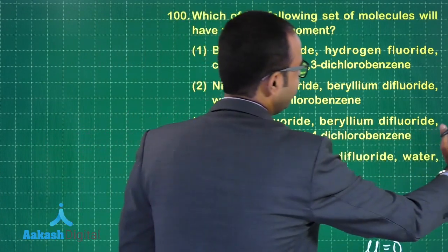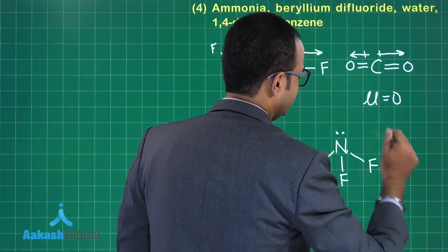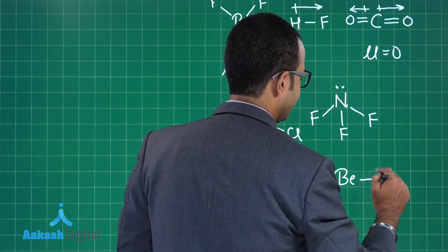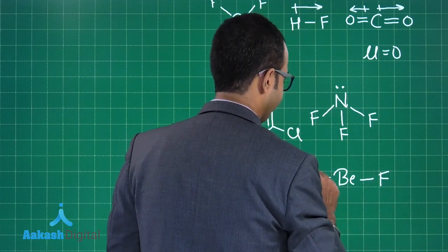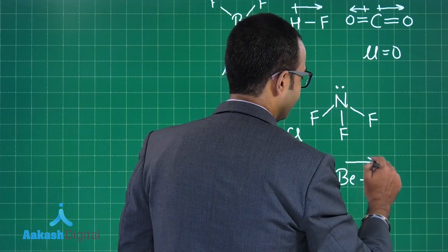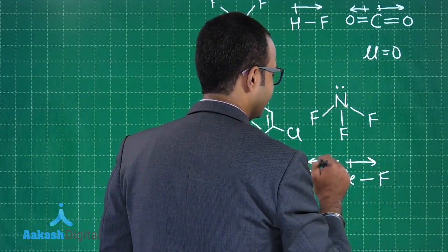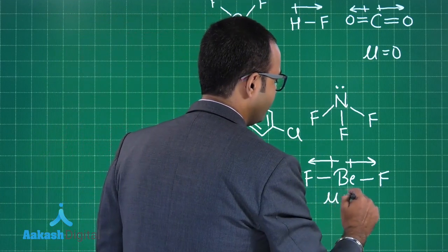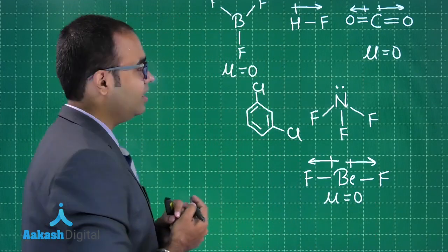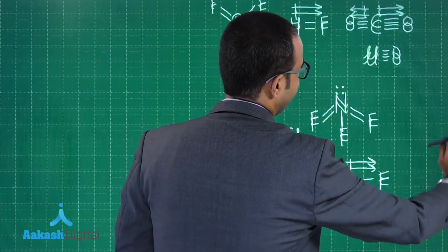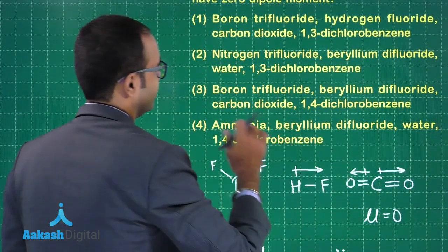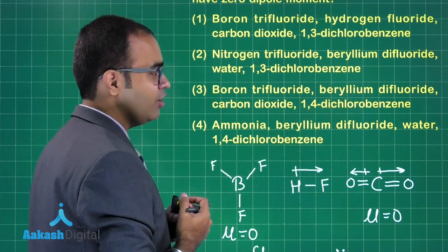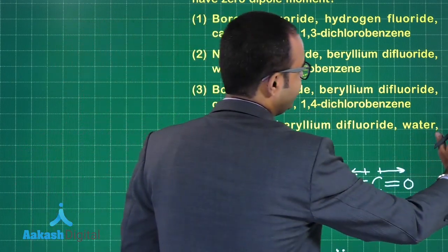Let us look at the third one: boron trifluoride, zero dipole moment, correct. Beryllium difluoride is BF2. Yes, both the dipole moments will cancel each other. If both dipole moments are canceling each other then the dipole moment over here is zero. So till now both the molecules have zero dipole moment.